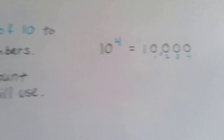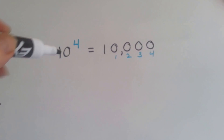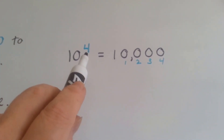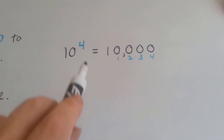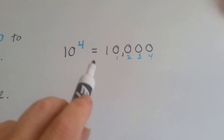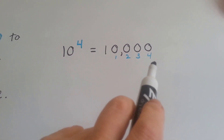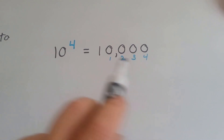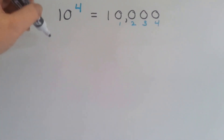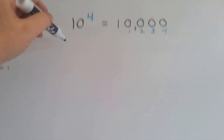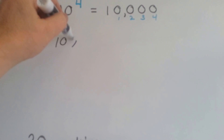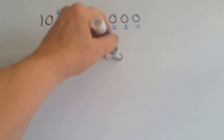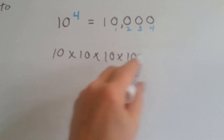Look at this one. We've got 10 to the fourth power. That tells me that we need 4 zeros, so it's going to equal a 1 and 4 zeros — 1, 2, 3, 4. Because 10 to the fourth means 10 times 10 times 10 times 10. Four of them.